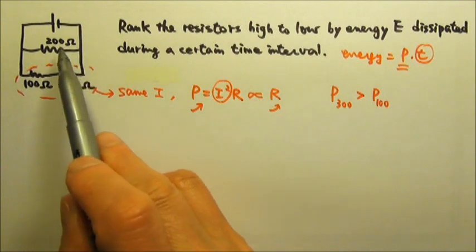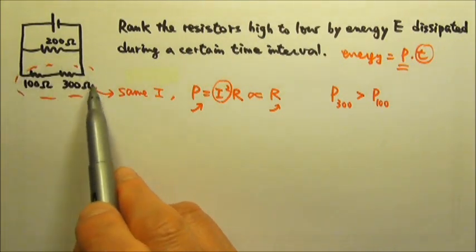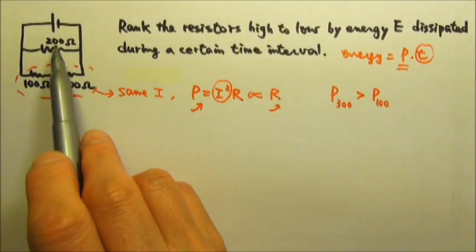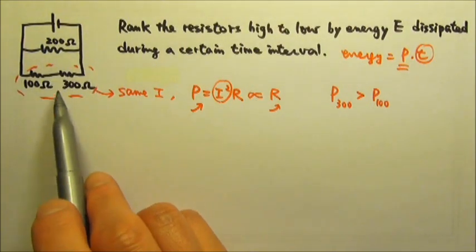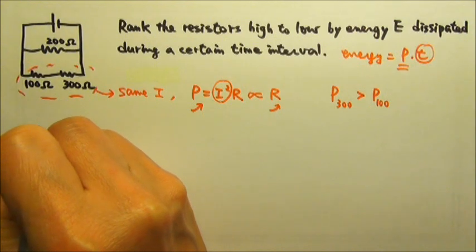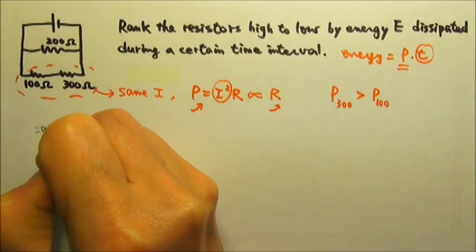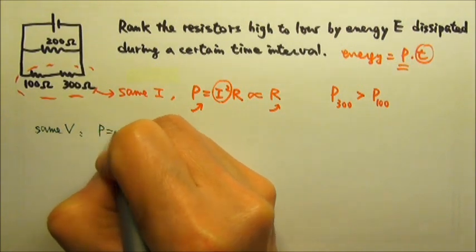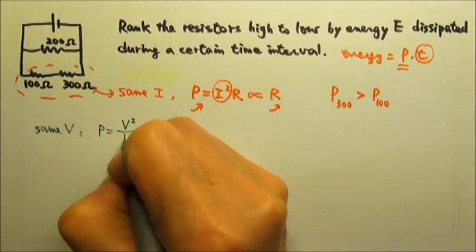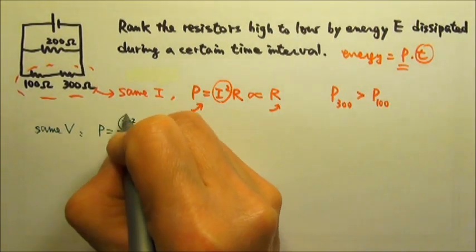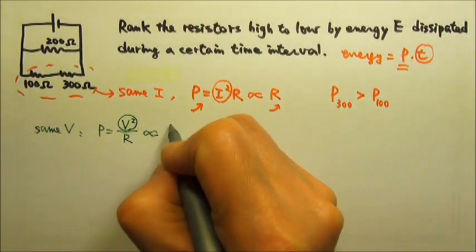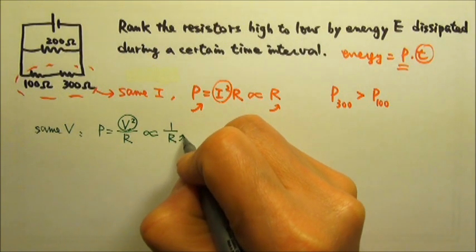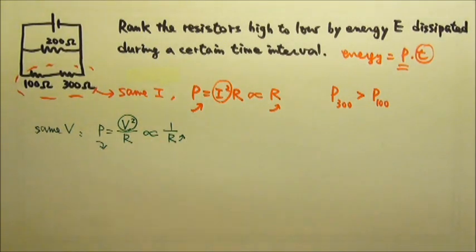Then let's compare the 200 ohms to this combination. These two, the 200 ohms and this combination, they are in parallel. If they are in parallel, they have the same voltage. If they have the same voltage, then it's convenient to use P equals V squared over R. Since they have the same voltage, we just have to compare the 1 over R.